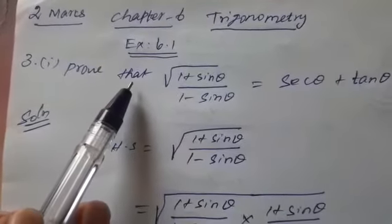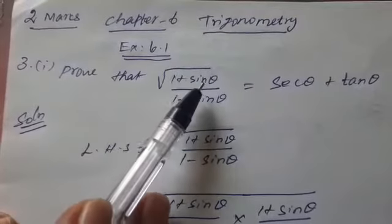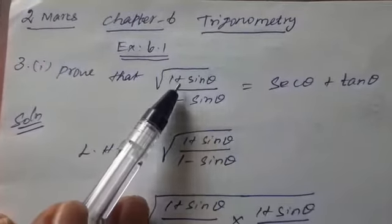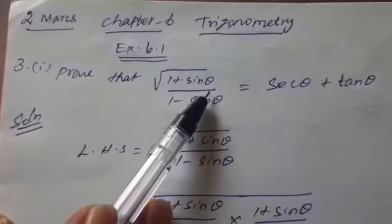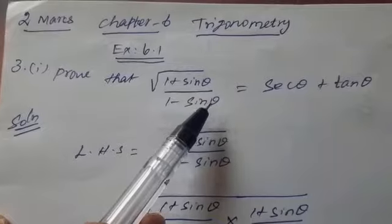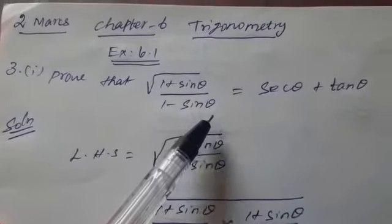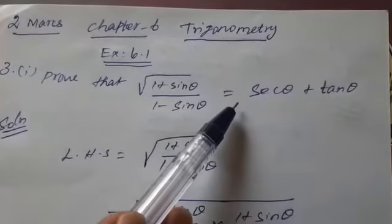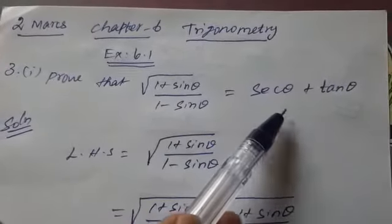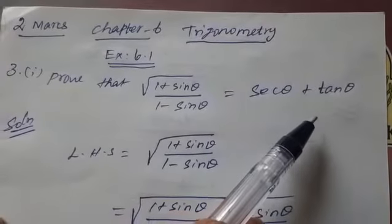Prove that the square root of (1 plus sin theta) divided by (1 minus sin theta) is equal to secant theta plus tan theta.